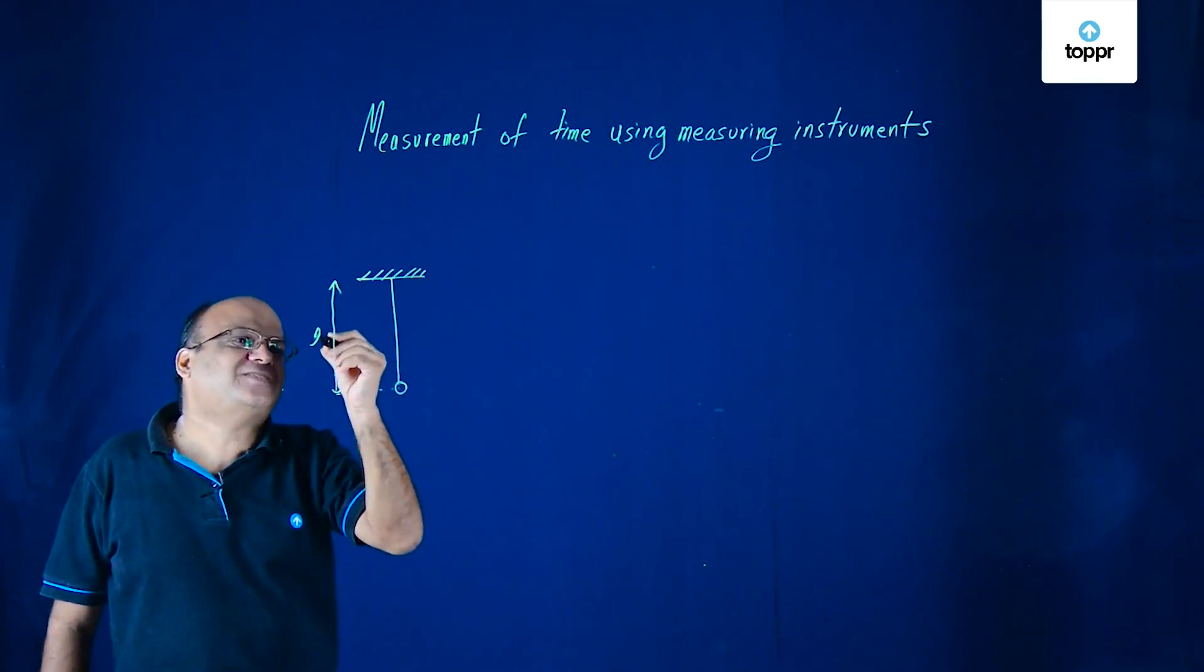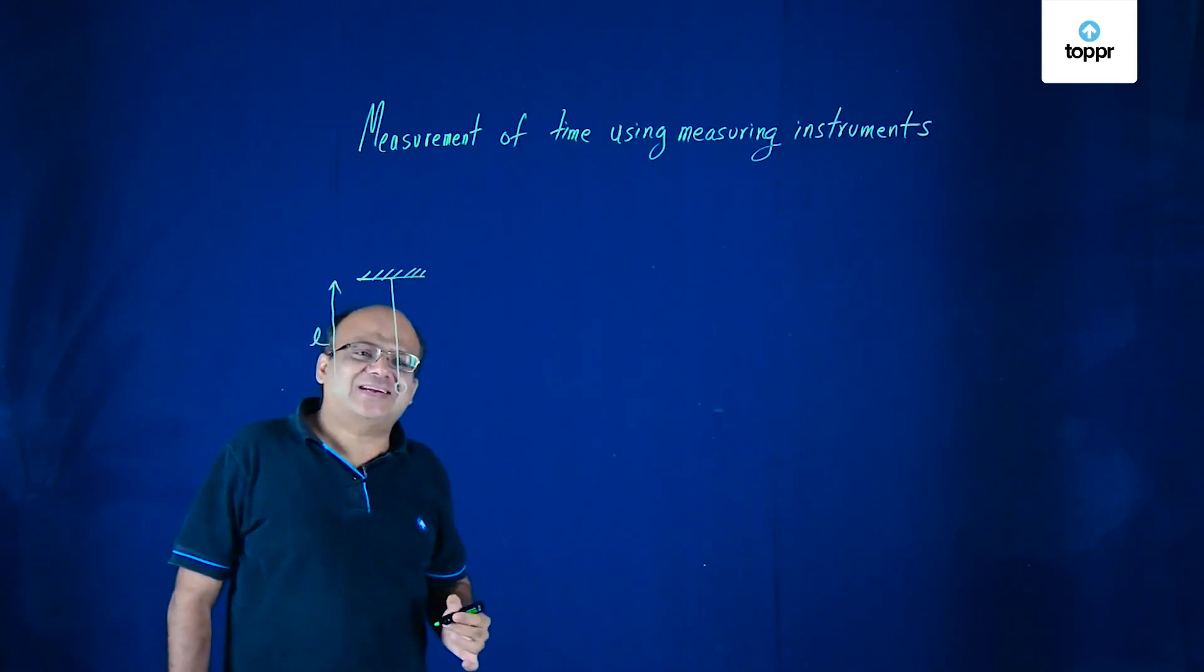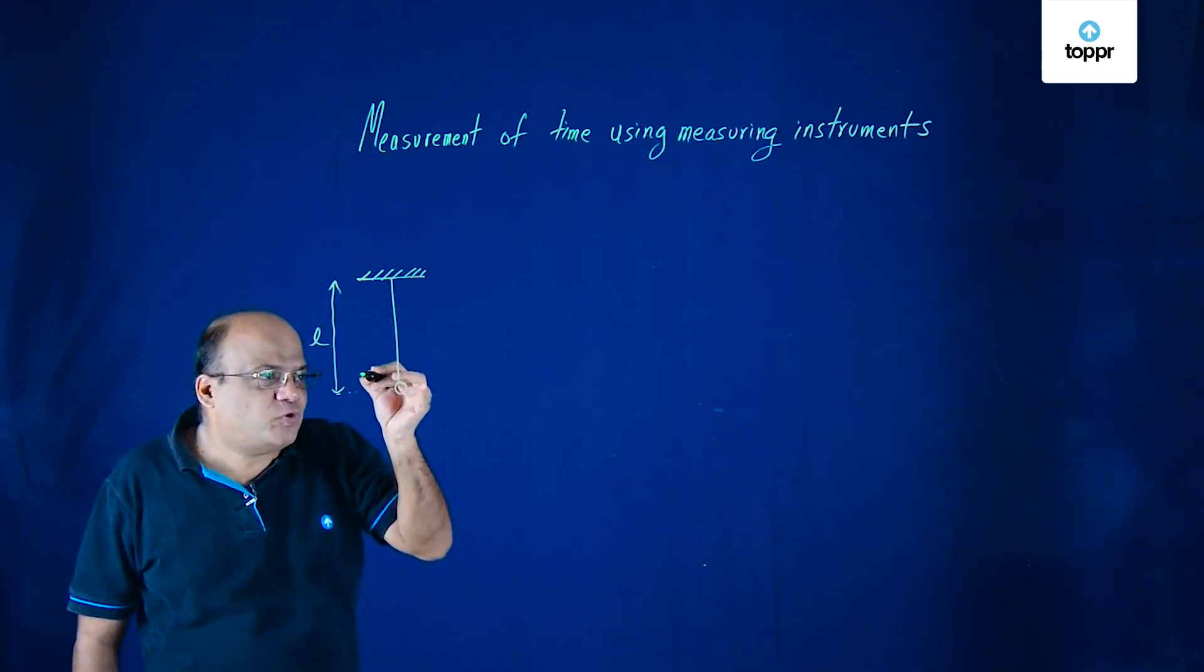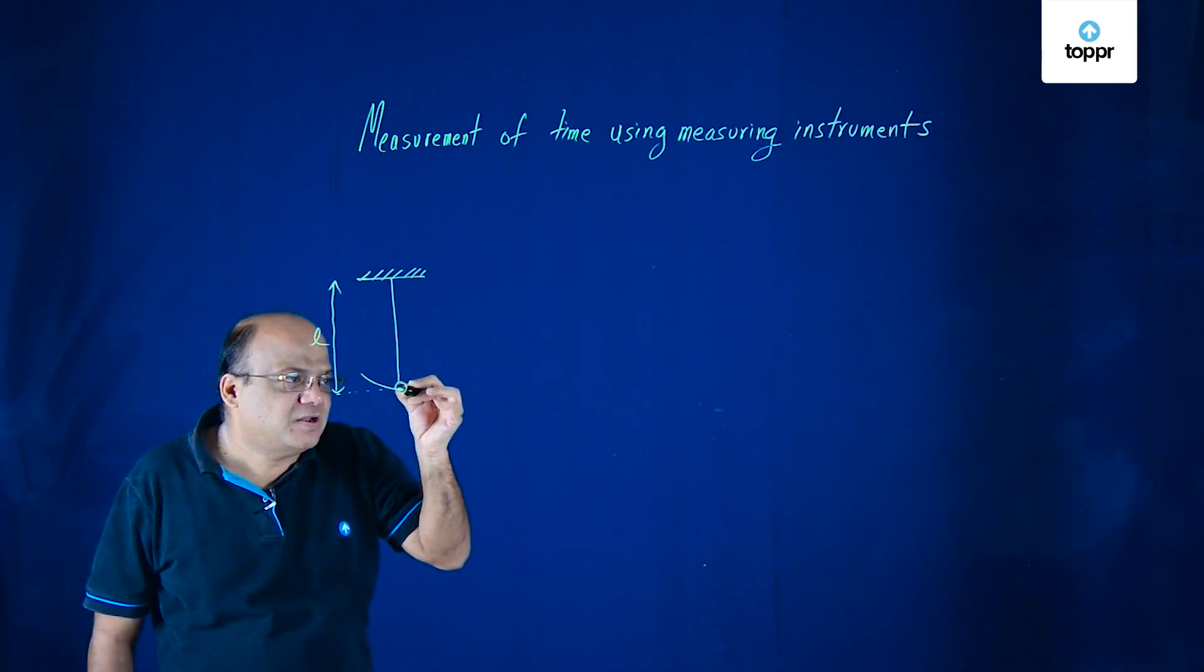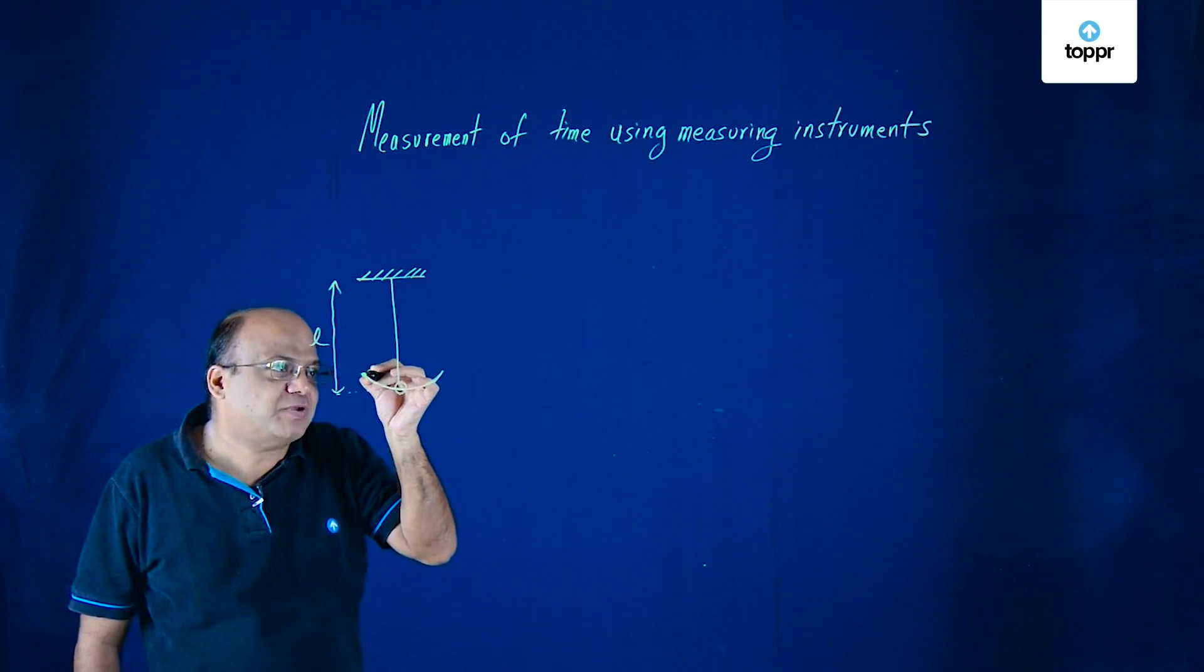G is acceleration due to gravity. And time period means the time to go from one here, come back here—that is the time to complete one full oscillation.